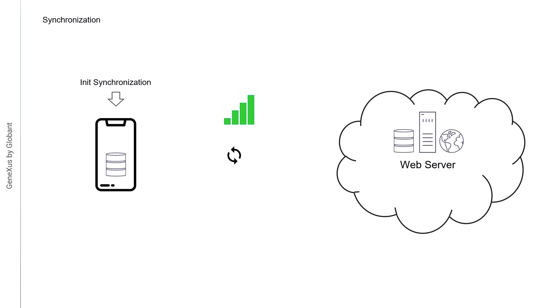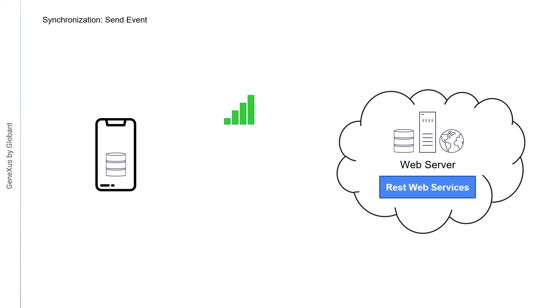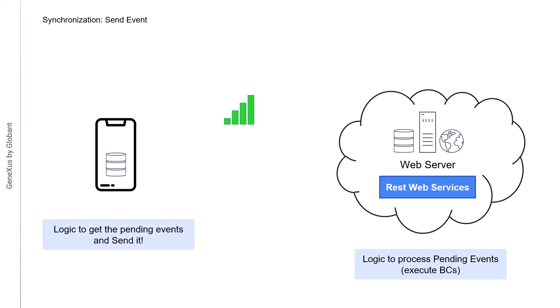The process through which the data changed in the device is sent to the server is called send. The data on the server that has changed is sent to the device to be updated at regular intervals or on demand. The process through which the data changed in the server is sent to the device is called receive. The device and the server communicate through the REST services layer. Both send and receive operations are implemented with server-side and client-side logic.